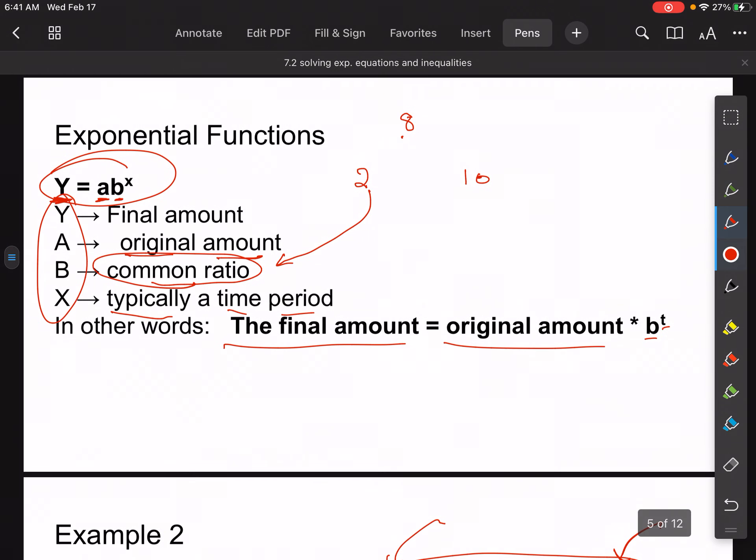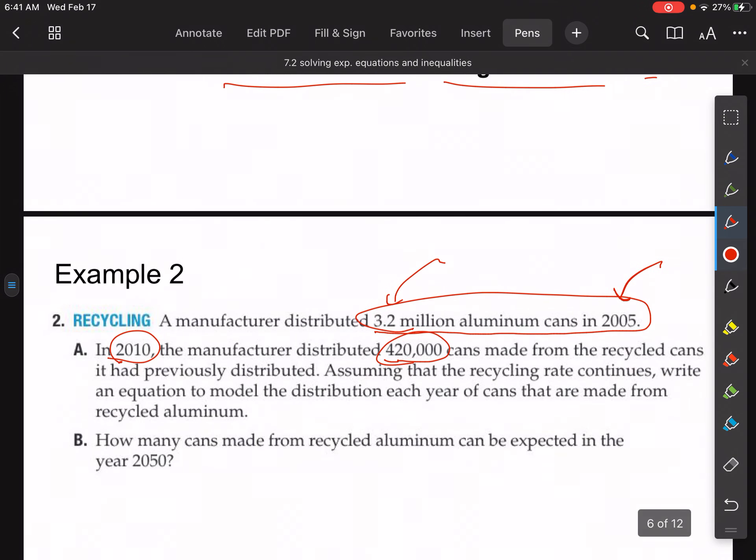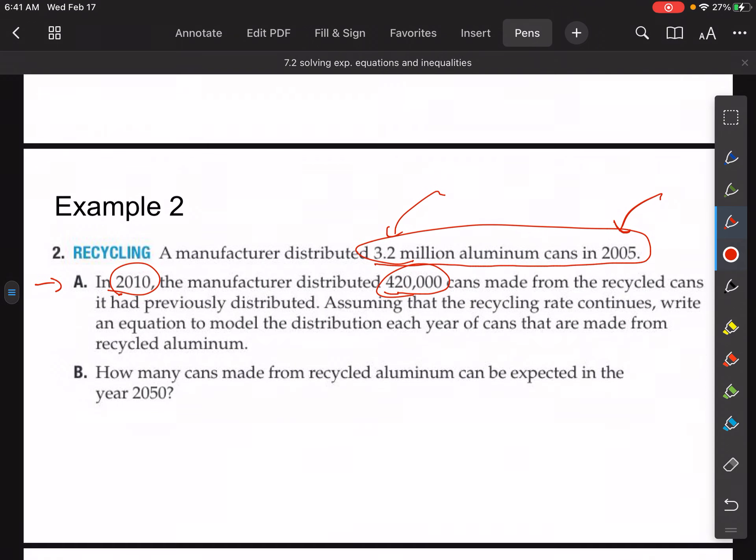In 2010, there's a new year. The manufacturer distributed 420,000 cans made from recycled cans that had previously distributed. Assuming that the recycling rate continues, write an equation to model the distribution each year of cans that are made from recycled aluminum. So what they want us to do is they want us to come up with an exponential equation for this. So let's try to see if we can plug it into what we know here. Remember that y is equal to the final amount. A is equal to the original amount.